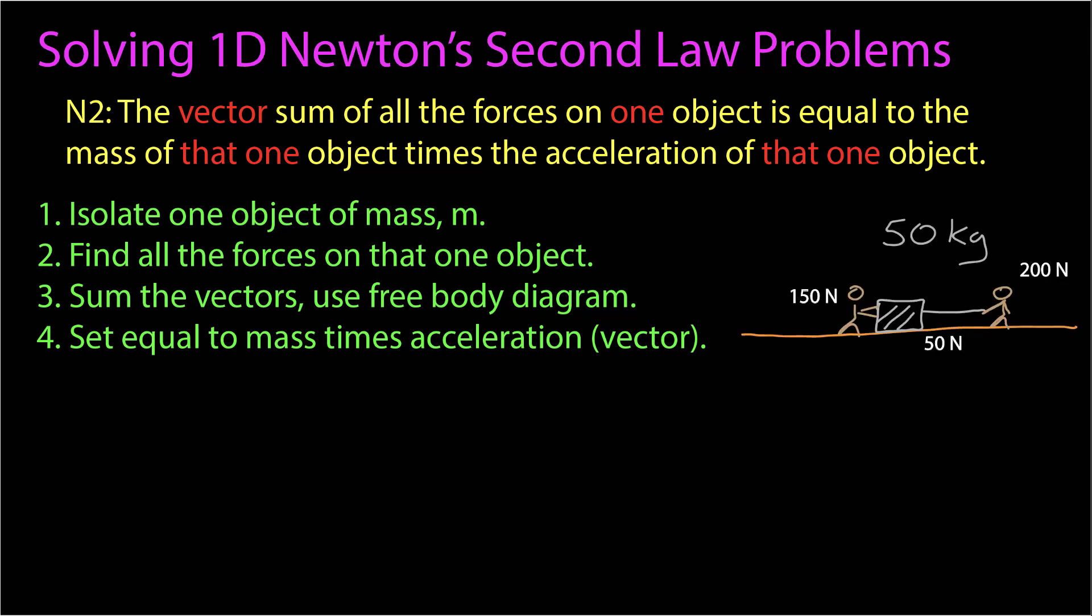Here's a problem. I have a 50-kilogram crate, and Alice is pulling on it with a tension of 200 newtons. Bob is pushing on it in the same direction with a contact force of 150 newtons, and there's a frictional force in the opposite direction of 50 newtons. This is a one-dimensional problem. We're setting up this sliding model where we only worry about forces in the horizontal direction for now to keep us in one dimension. We want to know the acceleration of the crate. So, we're going to apply Newton's second law to this problem.